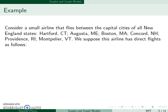We're going to do an example where we consider a small airline that flies between the capital cities of all the New England states: Hartford, Connecticut; Augusta, Maine; Boston, Massachusetts; Concord, New Hampshire; Providence, Rhode Island; and Montpelier, Vermont. We'll suppose this airline has direct flights as follows.